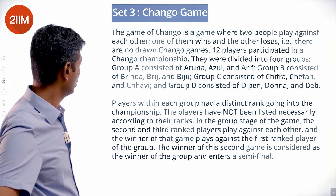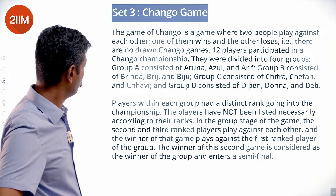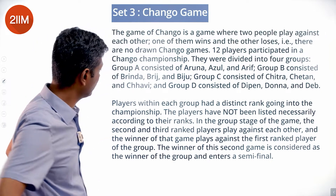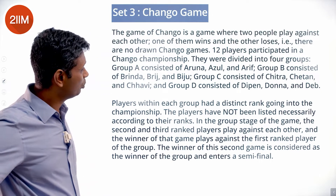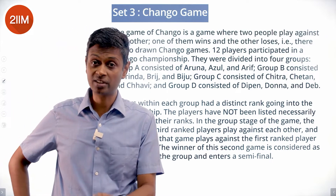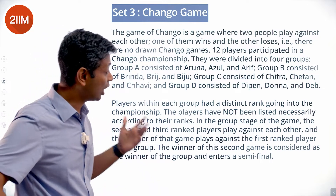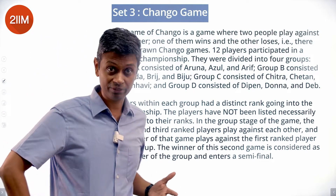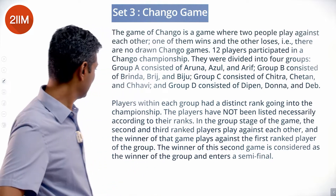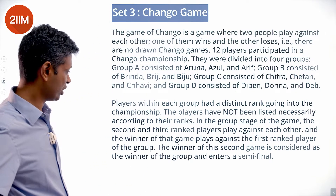The 12 players were divided into four groups: Group A — Aruna, Azul, and Arif; Group B — Brinda, Bridge, and Biju; Group C — Chitra, Chetan, and Chavi; Group D — Dipen, Donna, and Deb. Players within each group had a distinct rank going into the championship.